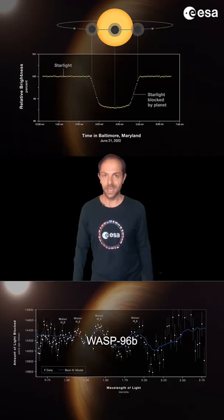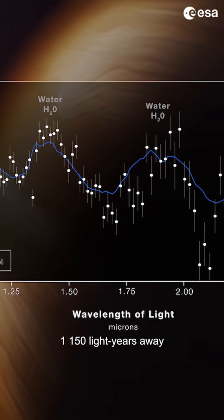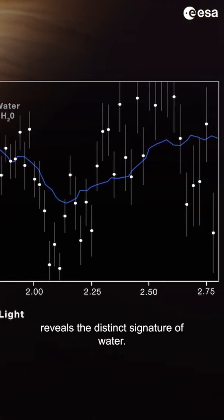WASP-96b: The spectrum of light, which contains information about the makeup of a planetary atmosphere 1,150 light-years away, reveals the distinct signature of water.